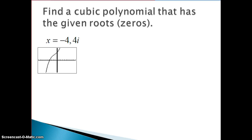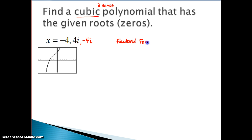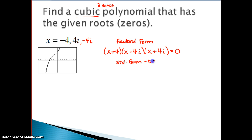We're going to do one more to solidify this idea. We know it's cubic again, so there should be three zeros. We note there's one real and one imaginary root, which means the third must be the conjugate — the opposite of the imaginary root. The first thing I'm going to do is write this in factored form: x plus 4, then x minus 4i, and x plus 4i. Now I'll work on putting it in standard form, which means distributing.